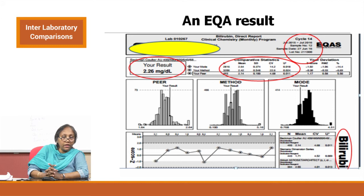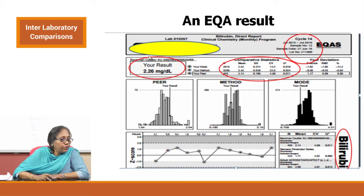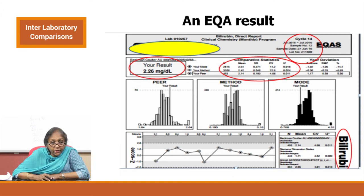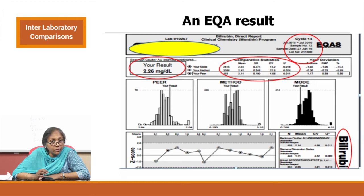This is an example EQAS report demonstrating how many of the attributes are satisfied. It includes the cycle, sample number, time of sample, lot number, reported results, units, comparative statistics, and analyte name. Pretty much everything we discussed is reflected here. The report is shown for teaching purposes only — not as a promotion of any particular EQAS program — to demonstrate the attributes a report should contain.